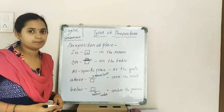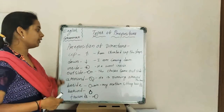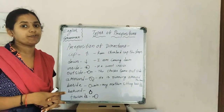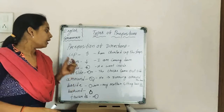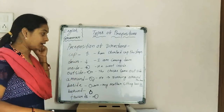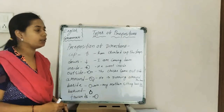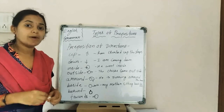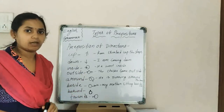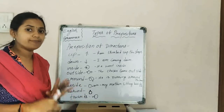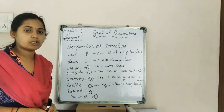Now moving to the third type: preposition of direction. The preposition of direction tells about the direction of going or coming — the direction of movement. The basic prepositions of direction are: up, down, inside, outside, around, beside, behind, towards, next to, and to. About more complex prepositions, we will discuss in a new video. In this video, we are discussing only the basic things.